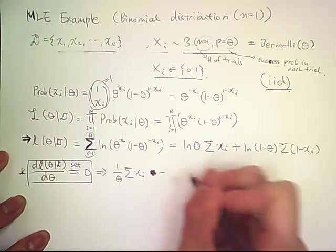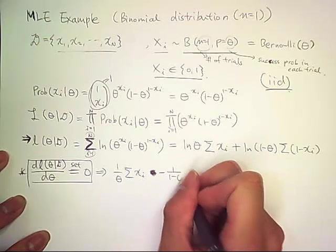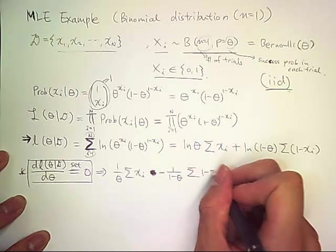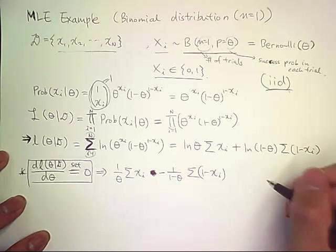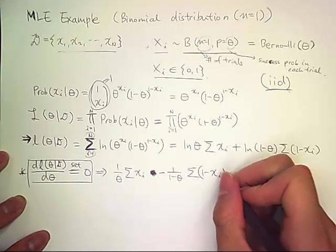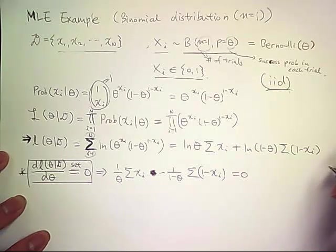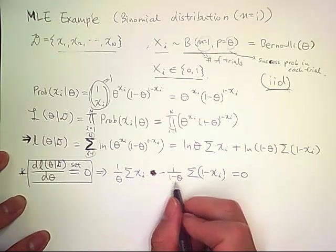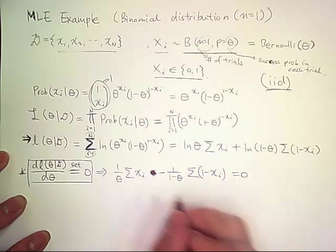So it's minus 1 over 1 minus theta times sum of 1 minus x sub i equals zero. And you multiply theta times 1 minus theta both sides.